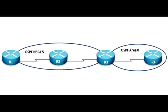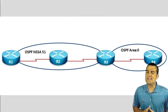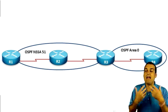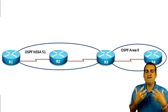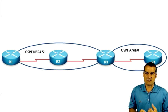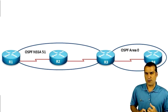What about the area border router — R3? Will it have the Type 7 LSAs? It sure will. It'll have those Type 7 LSAs, and they'll exist in the area 51 database on R3.